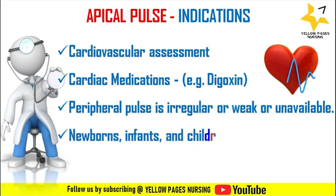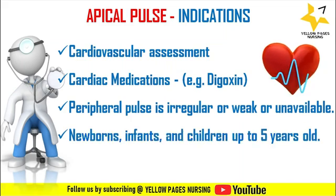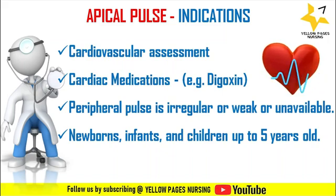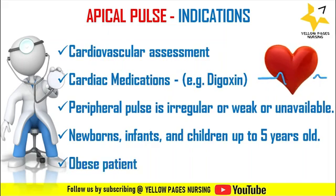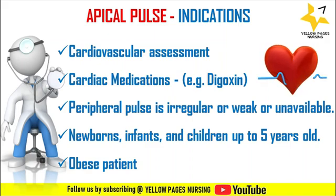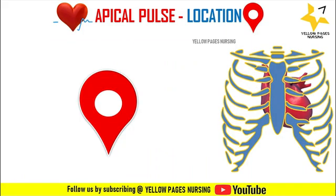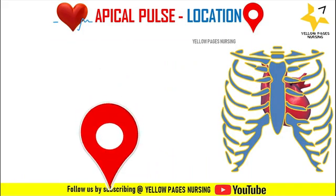Apical pulse is also monitored in newborns, infants, and children up to five years old, because in children below five years it becomes difficult to palpate radial pulses. Moreover, in patients who are obese, apical pulse is monitored because their peripheral pulses are difficult to palpate.